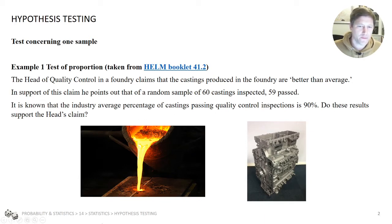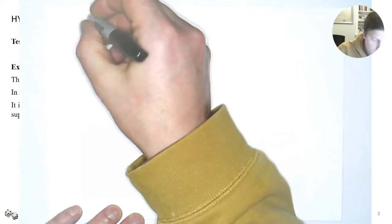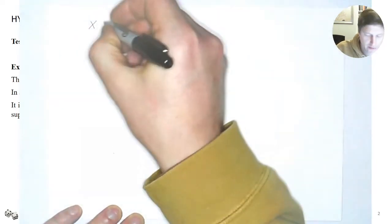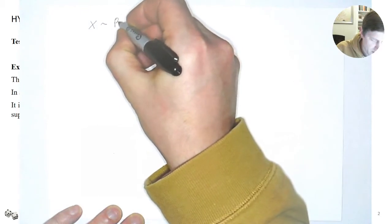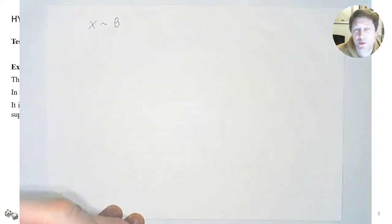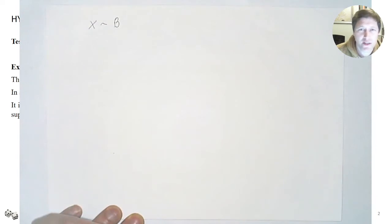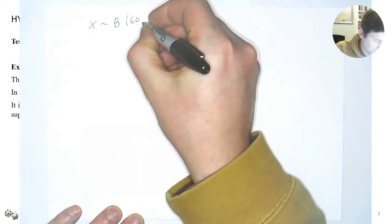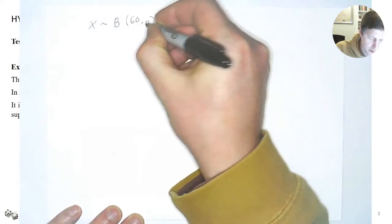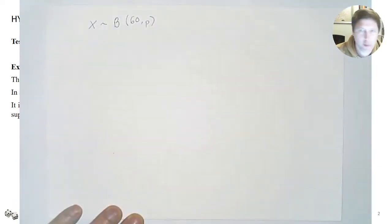I'm going to use my visualiser to help us on this problem. Our distribution is binomial because we have castings that either pass or don't — there are 60 of them, and each passes with some probability P.